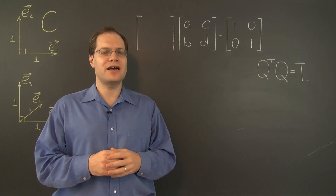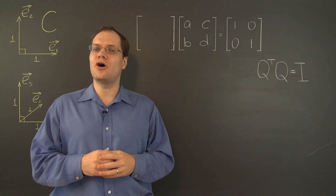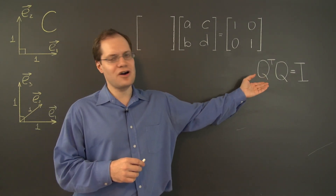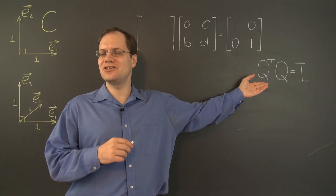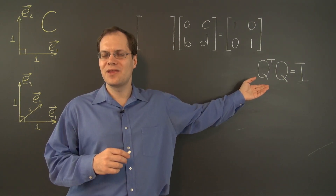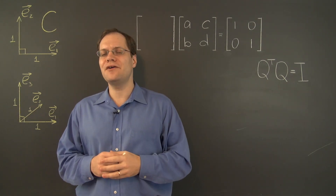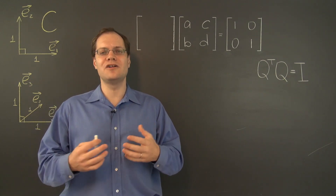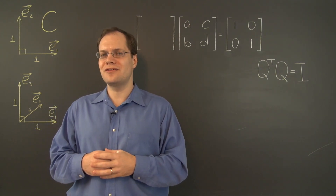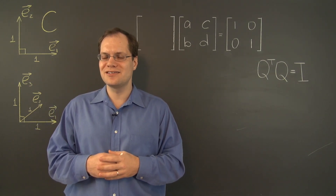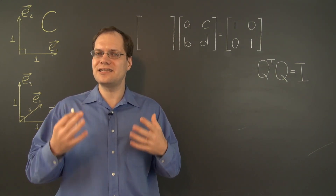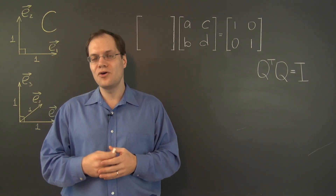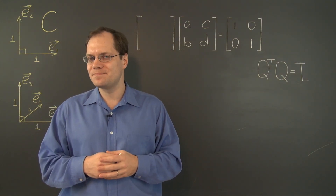In this video, we will try to determine what all 2x2 orthogonal matrices essentially look like. We will discover that there isn't much freedom at all — that all 2x2 orthogonal matrices essentially look like the standard rotation matrix, with one basic caveat.